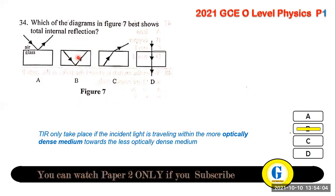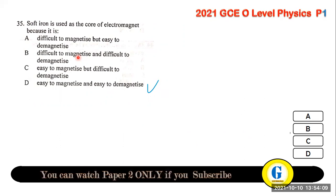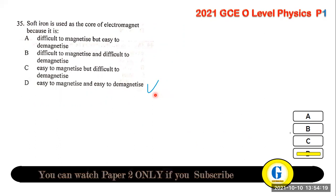Question 35: soft iron is used as the core of electromagnets because it is easy to magnetize and easy to demagnetize. When you switch off the current, the soft iron core loses its magnetism immediately.